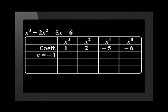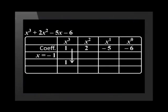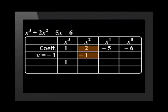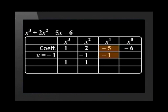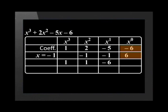In the third row, we write x equals negative 1. The next few steps will look confusing at first, but the more you practice them, the easier they'll become. The first step is to bring down the first coefficient, 1. Then we multiply this by negative 1 and write the answer under the x squared coefficient. We add 2 and negative 1 to get 1. We multiply 1 by negative 1 and write the answer under x to the power of 1. We add negative 5 and negative 1 to get negative 6. We multiply negative 1 by negative 6 to get 6, and negative 6 plus 6 equals 0. We have now divided the expression by the binomial x plus 1.